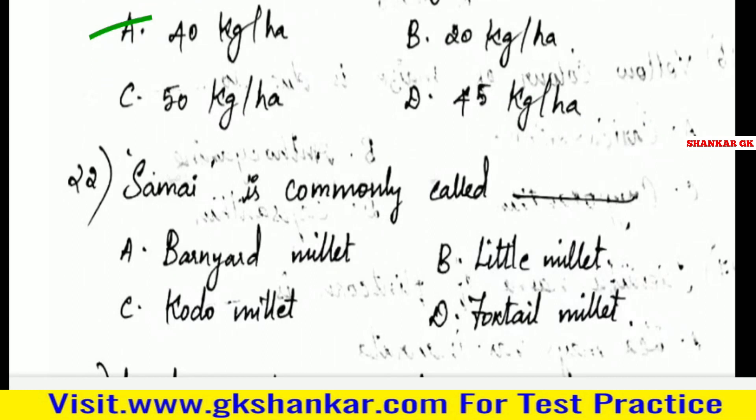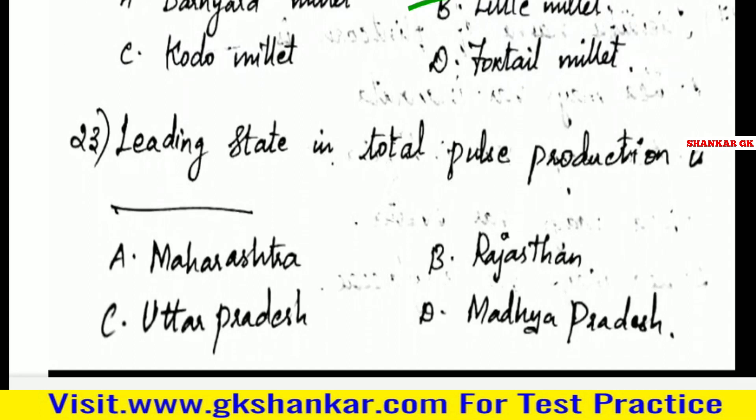Twenty-second question: Saamai is commonly called — A. Barnyard millet, B. Little millet, C. Kodo millet, D. Foxtail millet. Answer: B. Little millet.